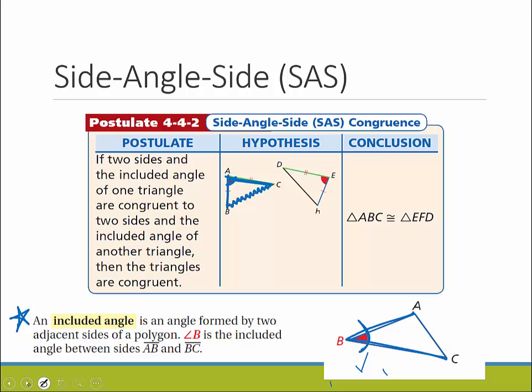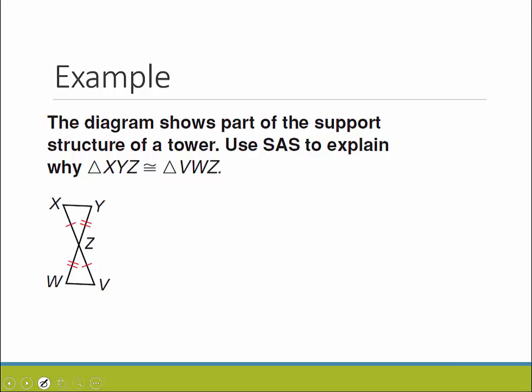So let's do an example with that one. This diagram shows part of the support structure of a tower. Use side-angle-side to explain why triangle XYZ is congruent to triangle VWZ. So far they give us two pieces.